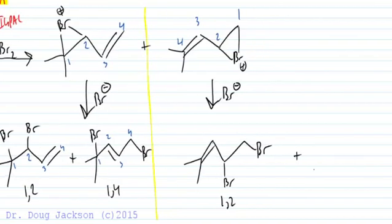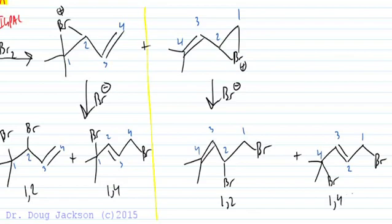And we also have the possible 1,4 product. And again, the positions, 1,2, 1,4 are helping us determine where the reactivity is occurring. Even though we started from two different intermediates and the one carbon is different on the two intermediates, we still have to look for 1,2 versus 1,4 in each possible scenario. So we end up with four possible products.